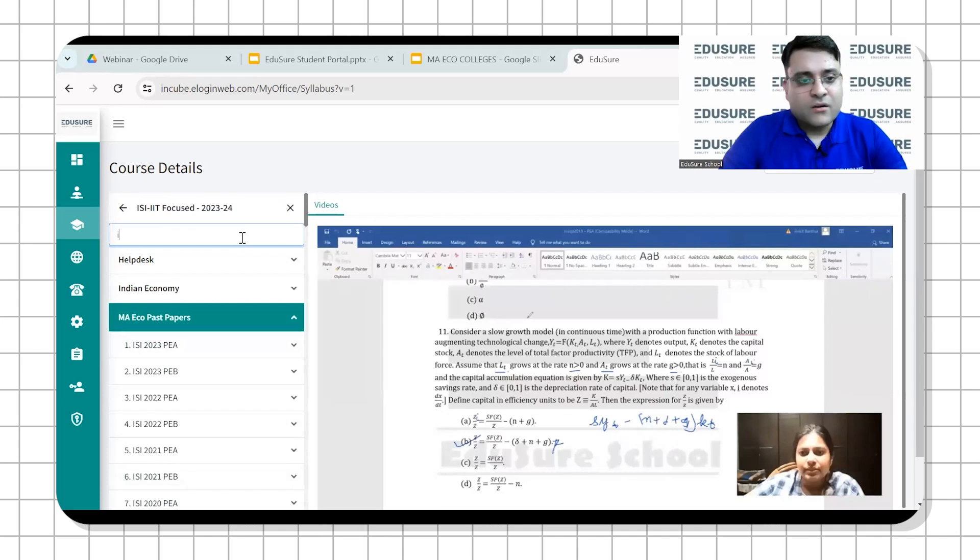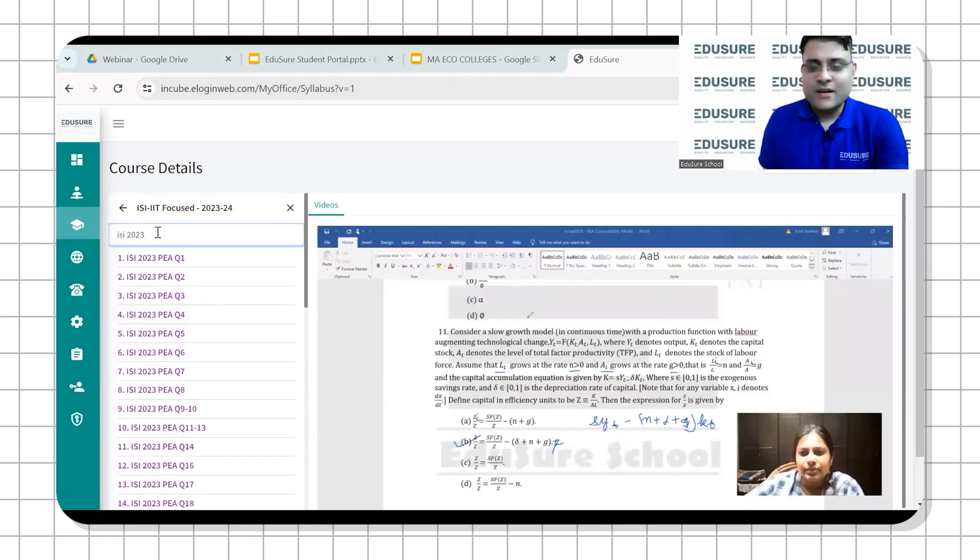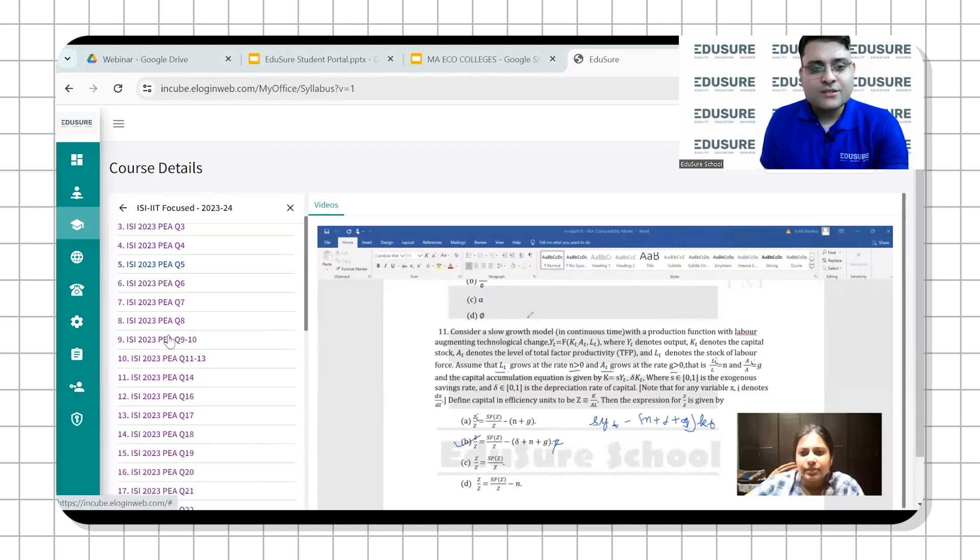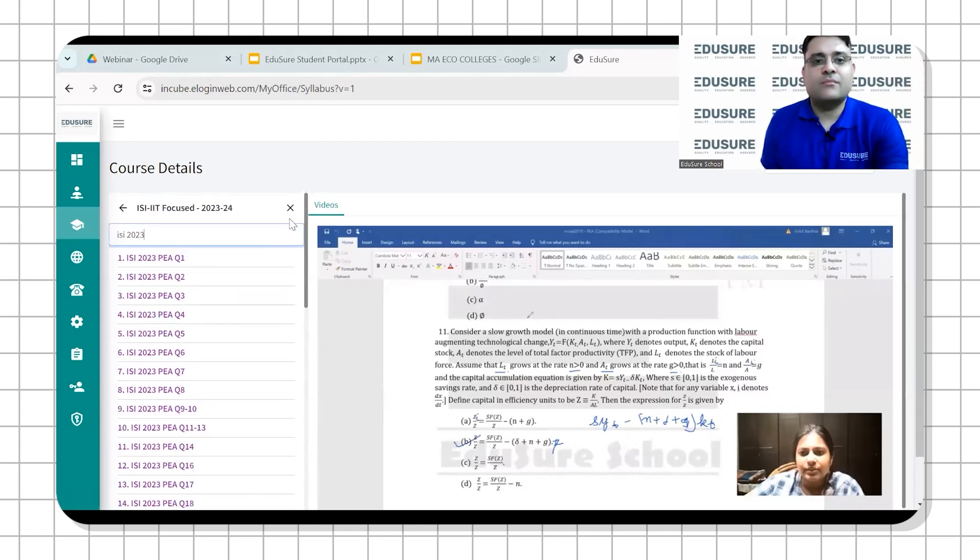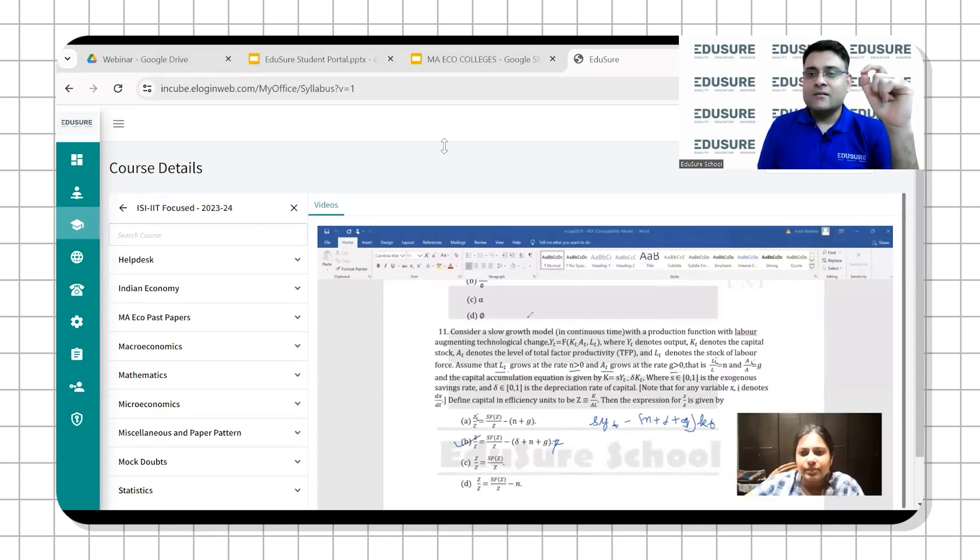If you want to search a particular question, if you want sir I want to take a look at ISI 2023 question number 5, you can just search it here in the search bar. ISI 2023, and all the question numbers of ISI 2023 are here. Seven hours a day effective studying should get you to ISI. Seven hours effective studying matlab ki phone has to be silent, switched off, airplane mode. Social media nahi ho sakta, khana nahi ho sakta in those seven hours.